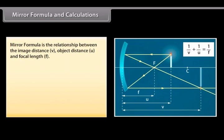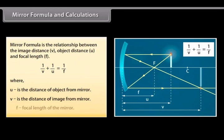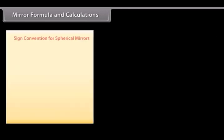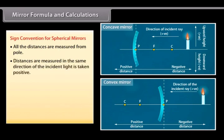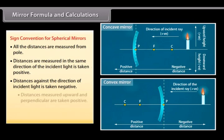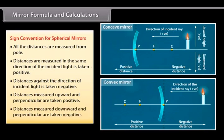Mirror formula and calculations. The mirror formula is the relationship between the image distance V, object distance U, and focal length F. U is the distance of the object from the mirror, V is the distance of the image from the mirror, and F is the focal length of the mirror. Sign convention for spherical mirrors: all distances are measured from the pole; distances in the same direction as the incident light are taken as positive; distances against the direction of incident light are taken as negative; distances measured upward and perpendicular are taken as positive; distances measured downward and perpendicular are taken as negative.